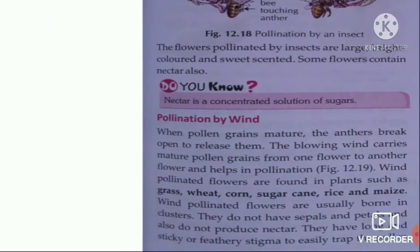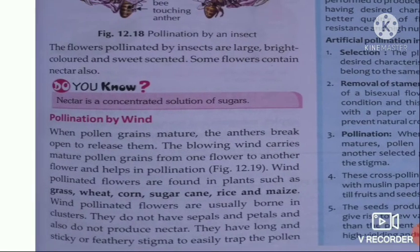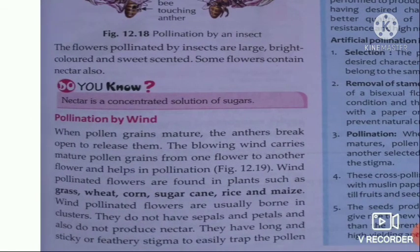Pollination by wind: wind-pollinated plants do not have attractive petals. These are found in plants such as grass, wheat, corn, sugarcane, rice, and maize. The blowing wind carries mature pollen grains from one flower to another.